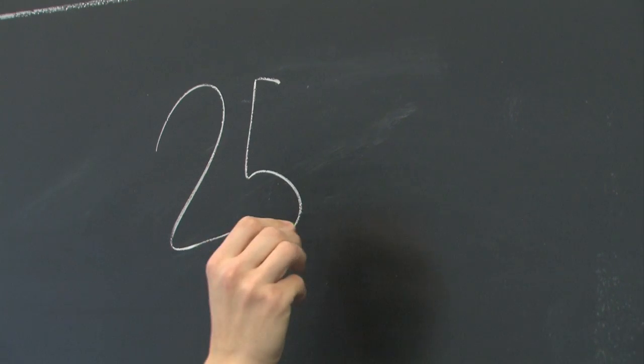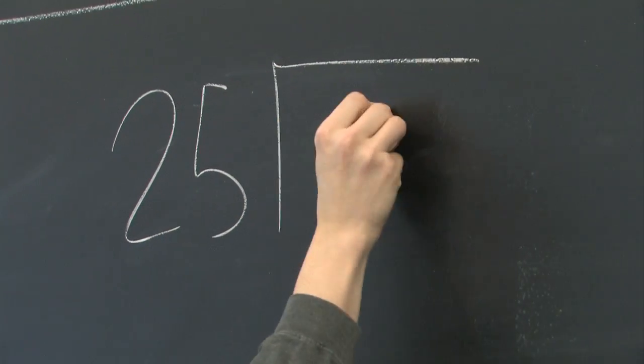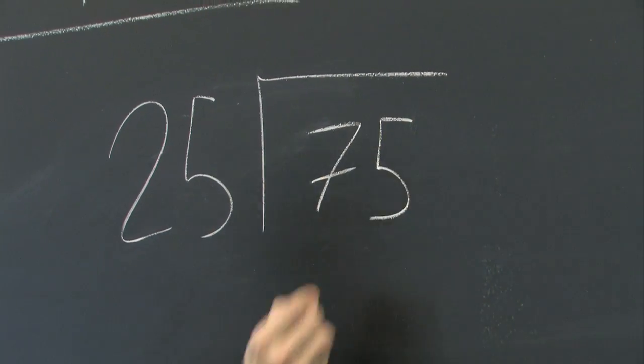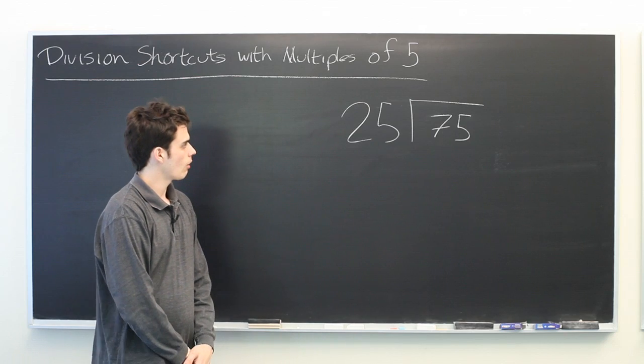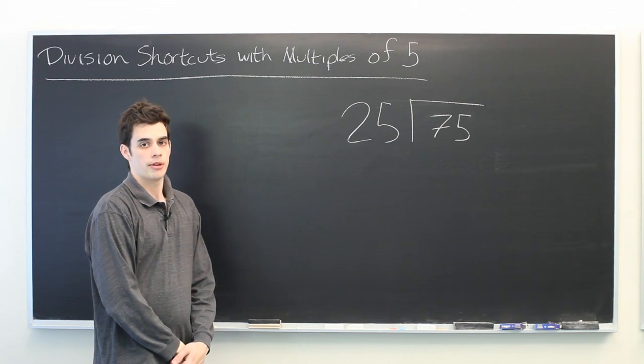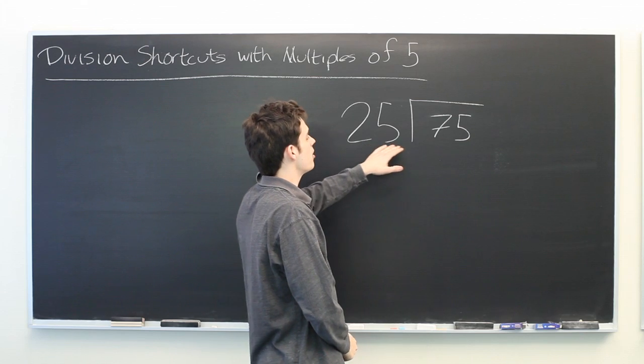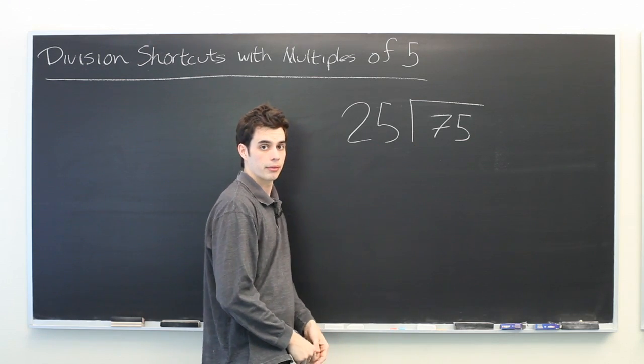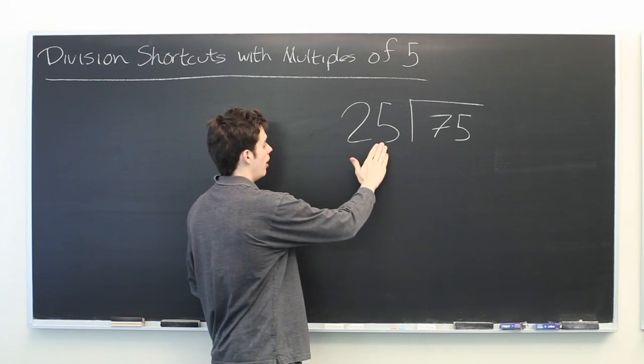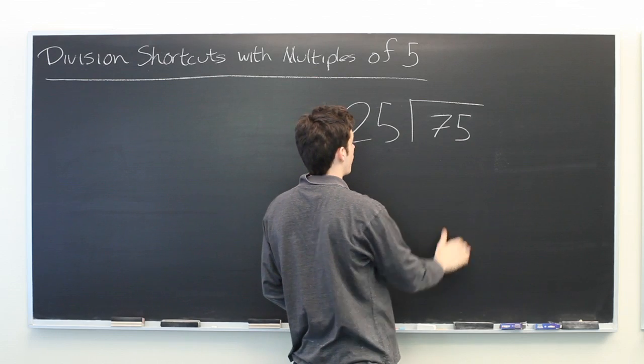Suppose that we're asked to find how many times twenty-five goes into seventy-five. While the answer to this may not be obvious off the top of your head, hopefully it's somewhat clear that both of these numbers are multiples of five, which you can tell because the last digit is either a five or a zero.